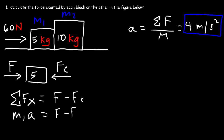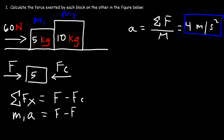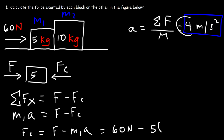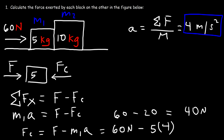Isolating the contact force: the net force equals M1·a, so the contact force Fc equals the applied force minus M1·a. With an applied force of 60 N, M1 = 5 kg, and a = 4 m/s², we get Fc = 60 − (5 × 4) = 60 − 20 = 40 N.